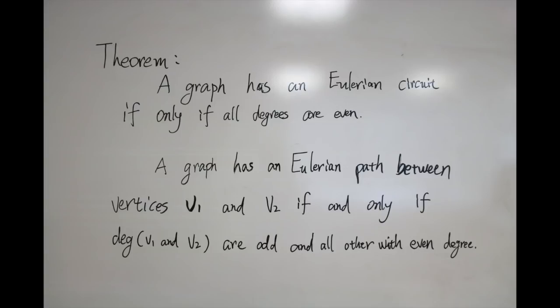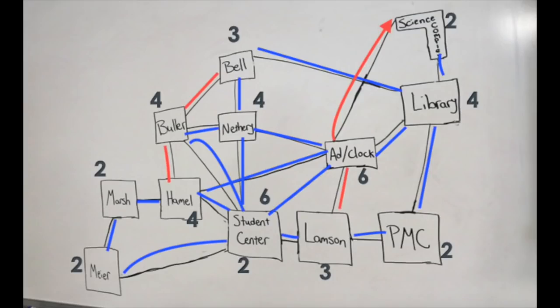Remember what we said about Eulerian paths? Euler said that a graph has an Eulerian path between two vertices if and only if the degrees of both of those vertices are odd, but all of the rest are even. So all we need to do is count the degrees of each building. Now we can see that there is no Eulerian path between Hamel and the Science Complex, but based on the degrees, we should be able to find an Eulerian path between Lambson Hall and Bell Hall.